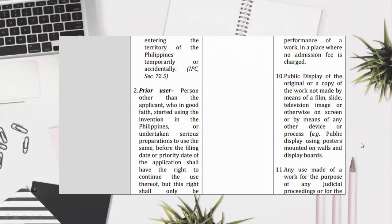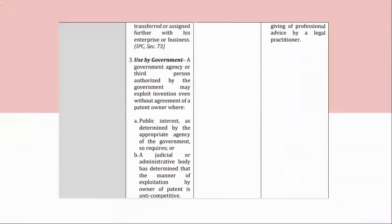(11) Any use made of a work for the purpose of any judicial proceedings, or for the transferred or assigned further with his enterprise or business. IPC, Section 73. (3) Use by government: a government agency or third person authorized by the government may exploit an invention even without agreement of a patent owner where (a) public interest, as determined by the appropriate agency of the government, so requires; or (b) a judicial or administrative body has determined that the manner of exploitation by the owner of the patent is anti-competitive. IPC, Section 74.